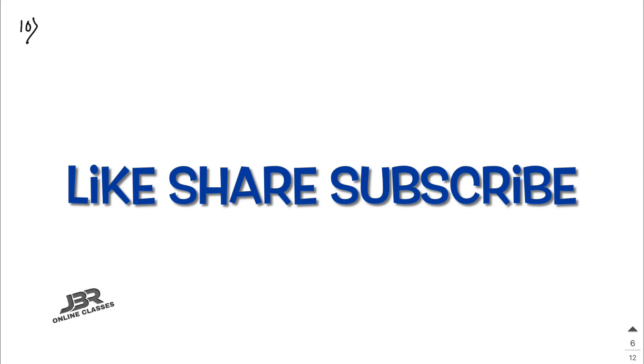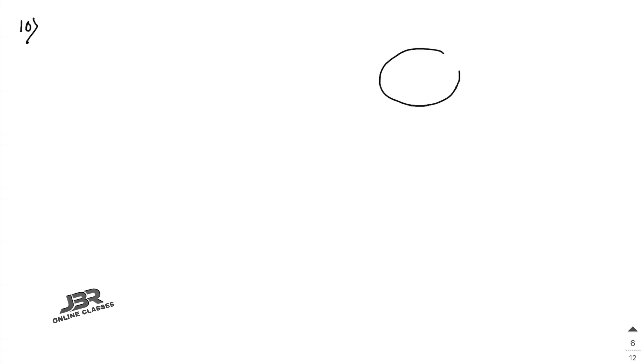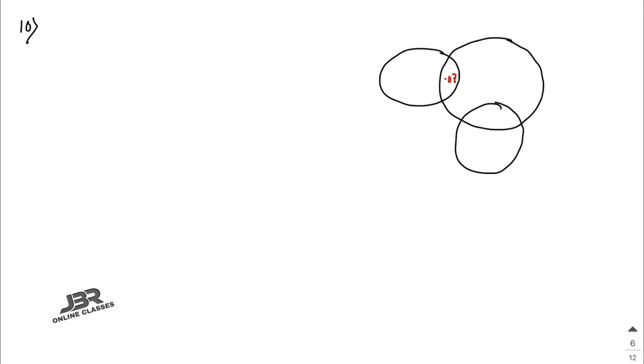Sum number ten — the last sum for this video. The adjoining Venn diagram shows three events. Drawing the Venn diagram: the regions show values 0.07 (A ∩ B only region), 0.13 (A only), 0.10 (A ∩ B ∩ C or overlap), 0.15 (B ∩ C region), 0.28 (C only area), with sets B, A, and C labeled. First, find P(A ∩ B) = 0.07.